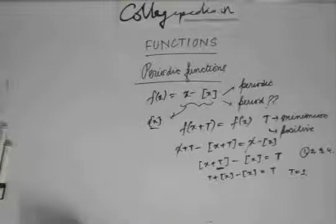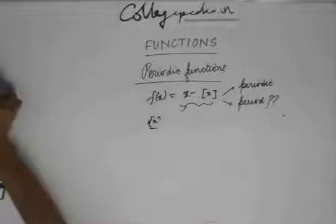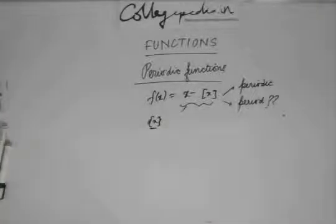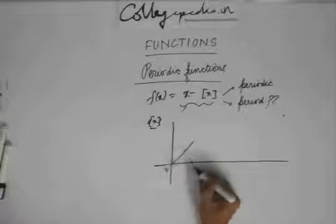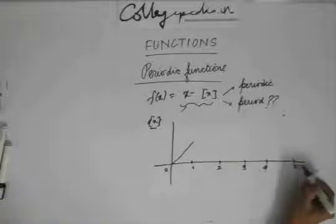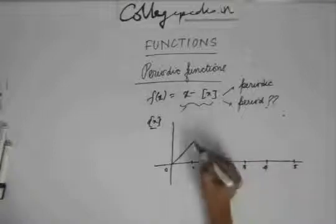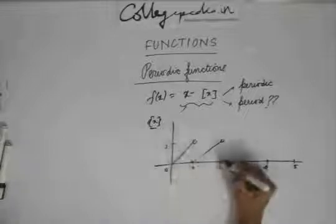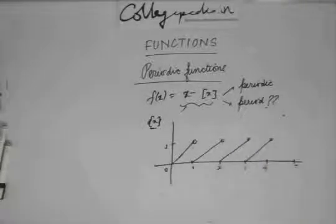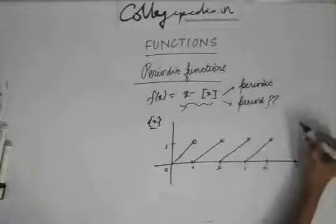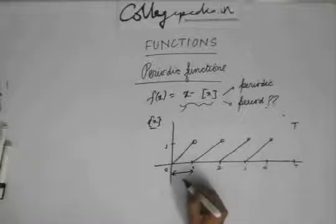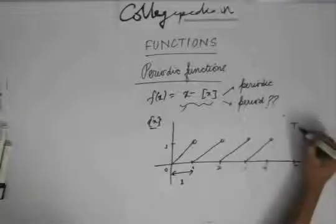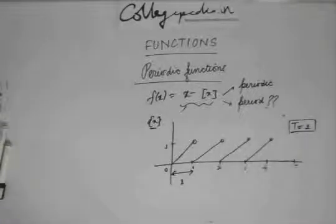That is how we prove this mathematically. Now let's move on to the graphical solution. As mentioned, this is the fractional part function, and I know what the graph of a fractional part function looks like. This is how the graph of the fractional part function looks. To find the period, you need to find the minimum value of T for which the function is repeating. As you can see, the minimum interval after which the function repeats is of length 1. So from the graph, you can directly conclude that the period of the function is 1.